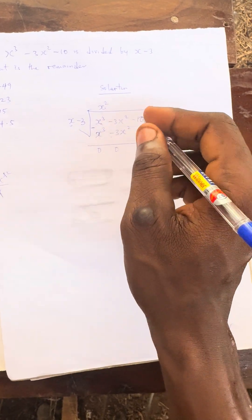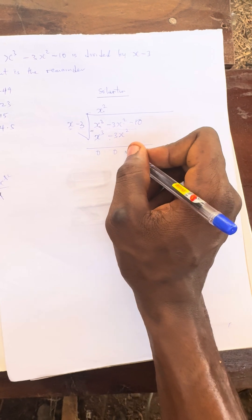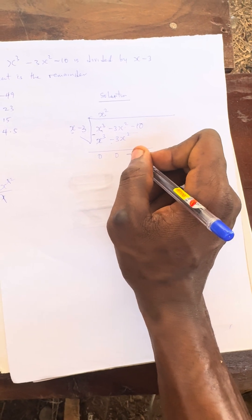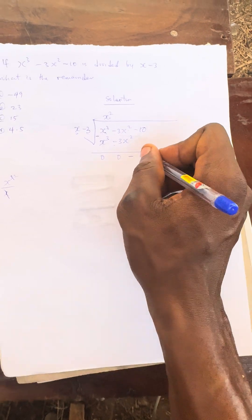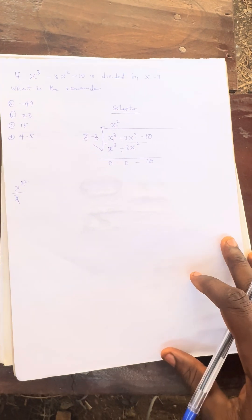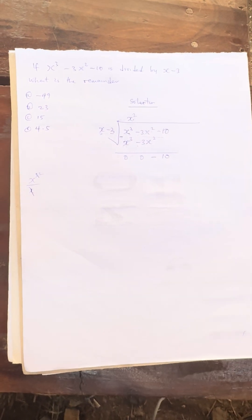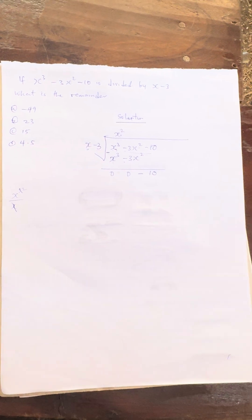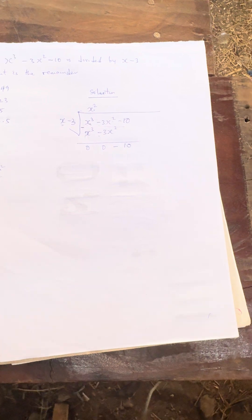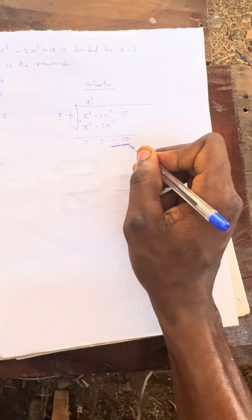So what remains here is minus 10. You cannot divide this anymore, so the value that remains is minus 10. So the final answer is minus 10. The correct answer is minus 10.